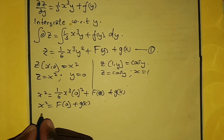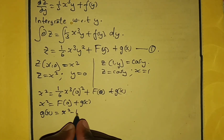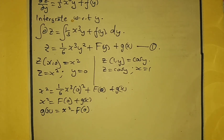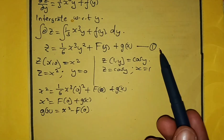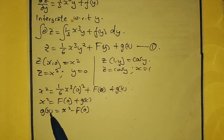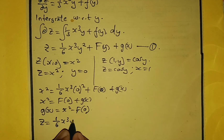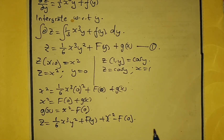So we can write g(x) = x² − F(0). We substitute this back into equation number 1, giving z = (1/6)x³y² + F(y) + x² − F(0). We can call this equation number 2.